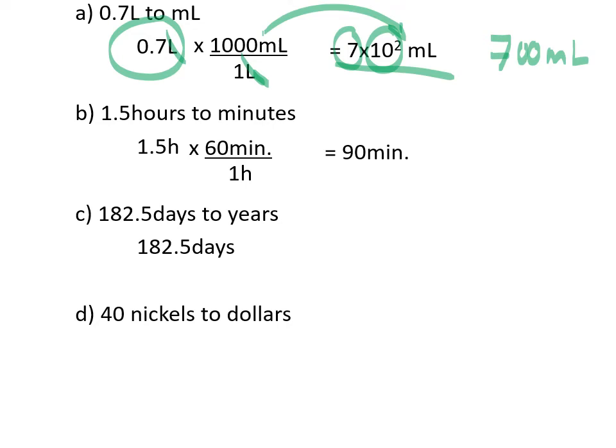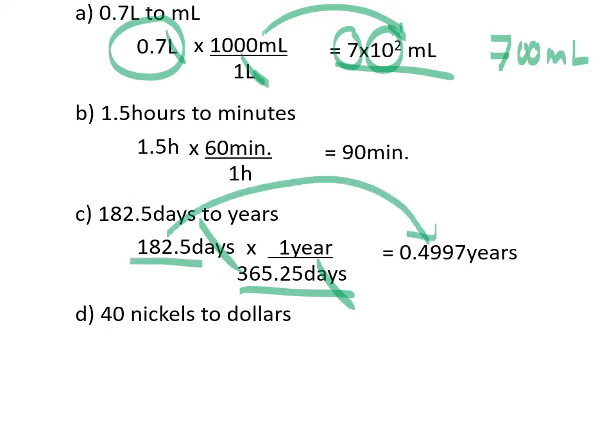182.5 days into years. Days is going to go in the bottom and we happen to know that there's 365.25 days in a year and therefore days are going to cancel out and we'll get our answer in years just under five years here. And four sig digs in our value here so we want to put our answer in four sig digs as well.